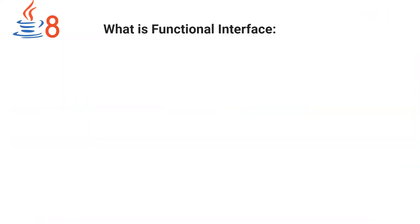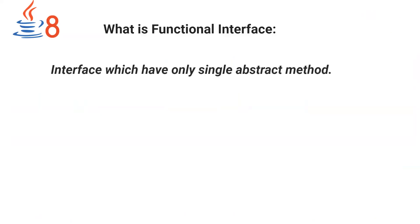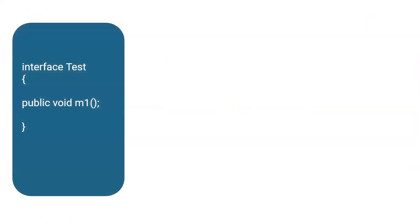So what is a functional interface? The interface which has only a single abstract method. Let me repeat: the interface which has only a single abstract method. Let's see some examples. If you see here, there is an interface called 'Test' which has method m1. So is it a valid functional interface or not? Yes, it is a valid functional interface because it contains only a single abstract method.